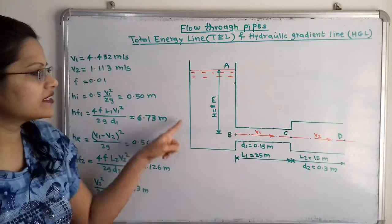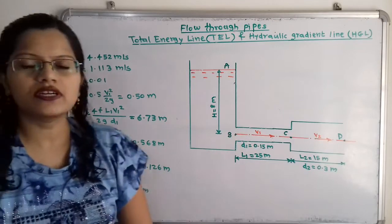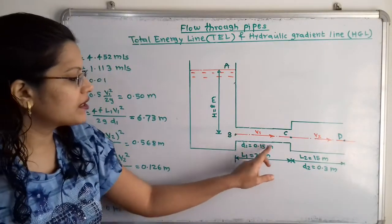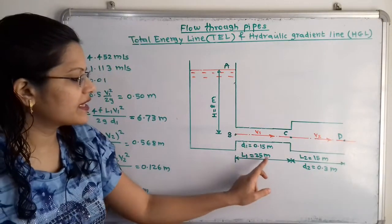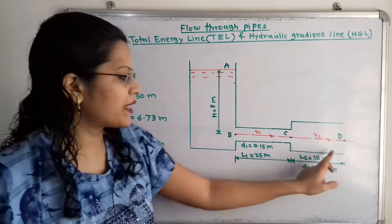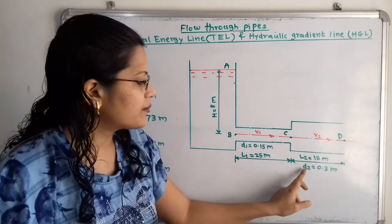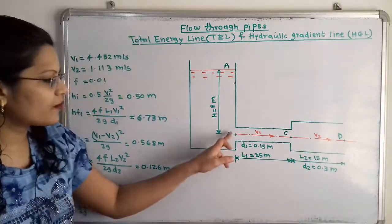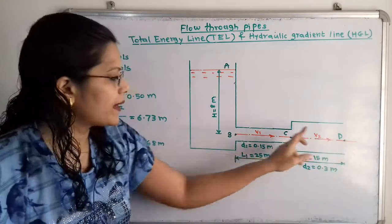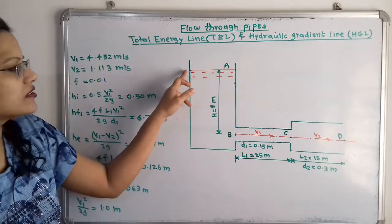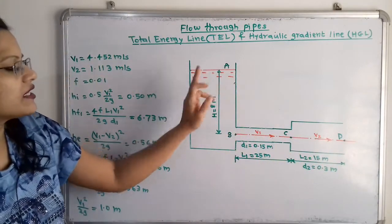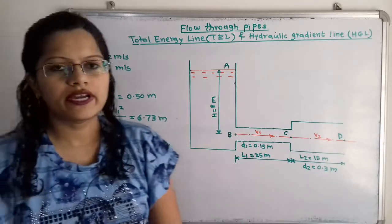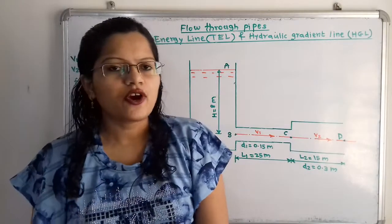One end of the pipe is attached to the tank. For pipe one, diameter d1 and length l1 is given, and for pipe two, diameter d2 and length l2 is given. From the center of the pipe, the height of the water surface in the tank is also given, that is h = 8 meters.